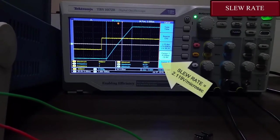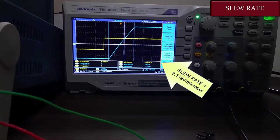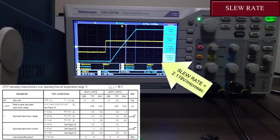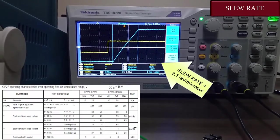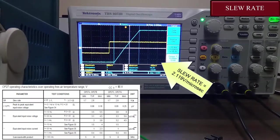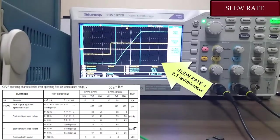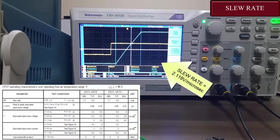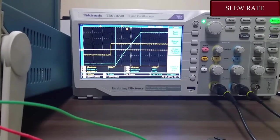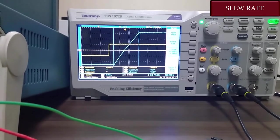As you can see in the data sheet, the minimum for OP27 is 1.7 and typical is 2.8. Our obtained value is between that, so it is matching with the data sheet. Now let's see what happens with OP37. Now I am using OP37.